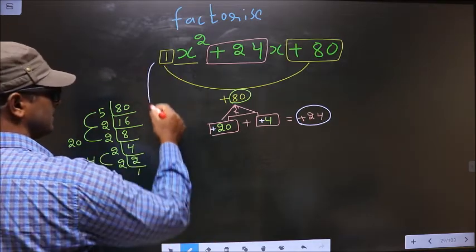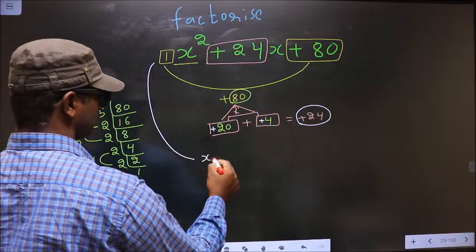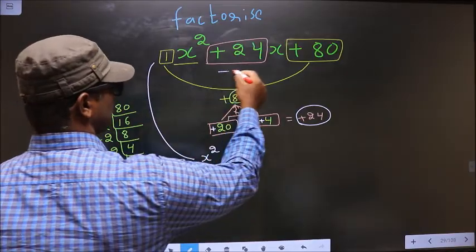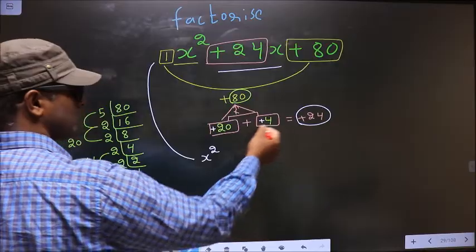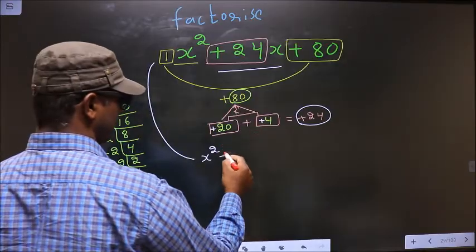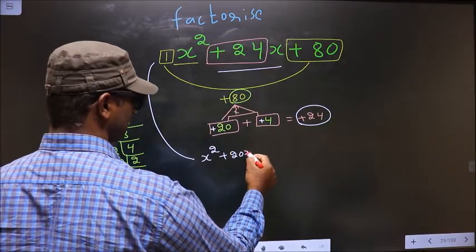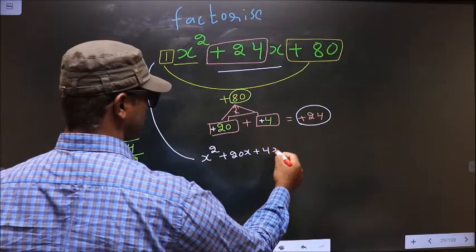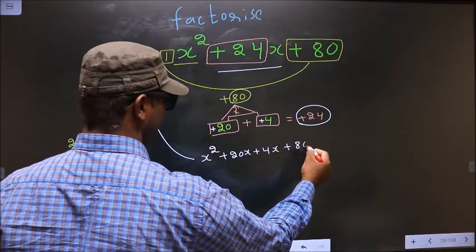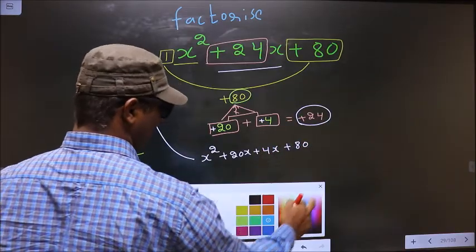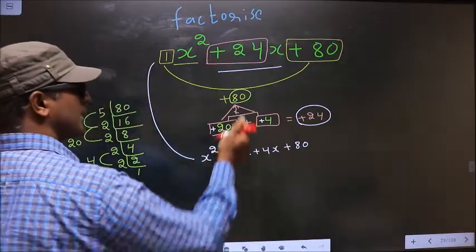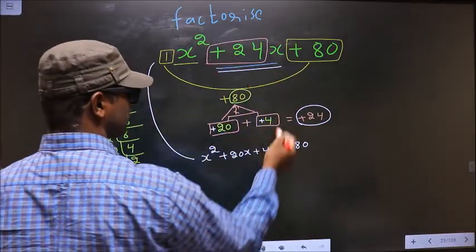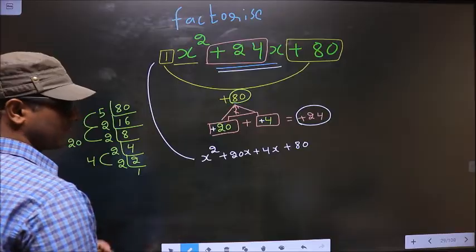Now you change this. In place of 24x now you should write this: that is plus 20x plus 4x plus 80. Did you understand? In place of 24x I have written this.